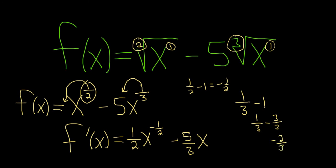1 minus 3 is negative 2, so negative 2 thirds. And that would be the final answer to this problem.